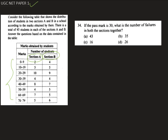In this question we are asked if the pass mark is 30, then what is the number of failures in both sections together? Therefore we need to find the total number of students who do not get this minimum pass mark.